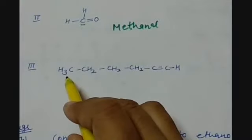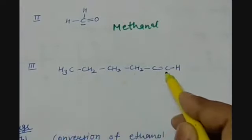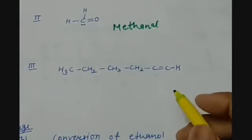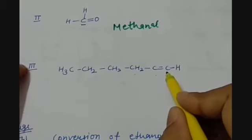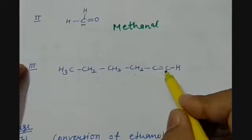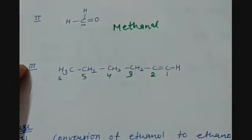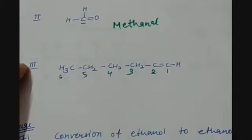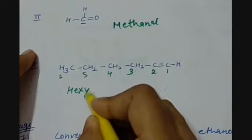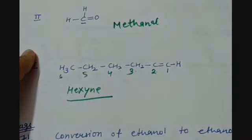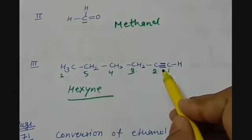The third compound is CH3CH2CH2CH2CH2C≡CH. Counting the carbons: 1, 2, 3, 4, 5, 6 — total 6 carbon atoms are present. The chain will be hexane, but we also have a triple bond, so we need to provide the numbering. As the triple bond is at the first position, there is no need to mention the position. The word root is hex, the suffix is yne, and the IUPAC name is hexyne.